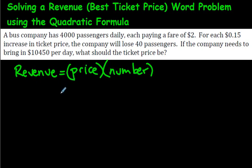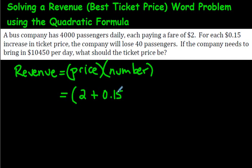Revenue equals price times number of items. The original price the bus company charges is $2. But they're talking about increasing the ticket price, so that's a plus — they increase by $0.15 each time. If they increase once it's $2.15; twice it's $2.30. We're trying to find the number of increases that gives the target revenue. Let X be the number of increases in price, so the price expression is 2 + 0.15x.